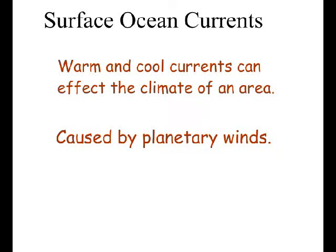Surface ocean currents are really straightforward and simple. Oftentimes the ocean is going to be warmer in some spots and cooler in others. Because of wind blowing the surface ocean around — we're only talking about maybe the top 10% of the ocean — surface ocean currents, which are caused by planetary winds, make some cool currents blow towards warm areas and some warm currents blow towards cool areas.